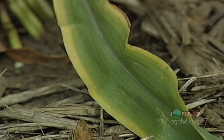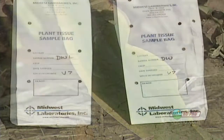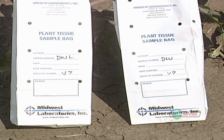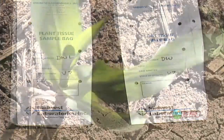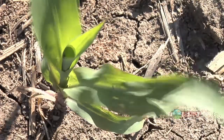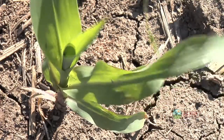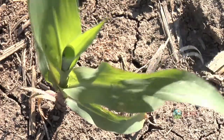Now one of the things we will tell you is there are a lot of other things that can turn corn purple or turn corn yellow, so you have to do a little investigation. You might want to send some plants in for leaf tissue analysis. Darren and I do that ourselves because it's hard to know for sure what you're dealing with until you find out from the plant study.